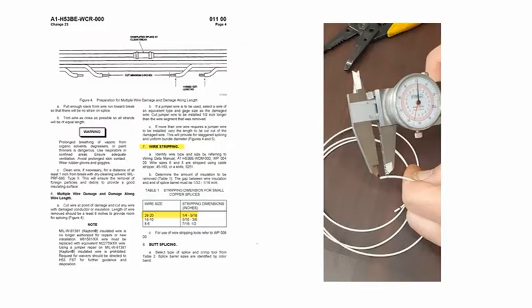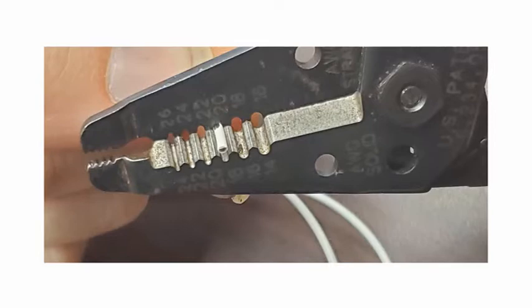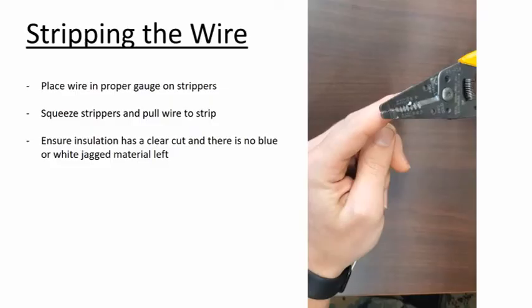Then, you must follow the publication to determine your stripping dimensions. Mark your wire using the measuring tool, place the wire in the correct gauge number on your wire strippers, then you may now strip the wire.